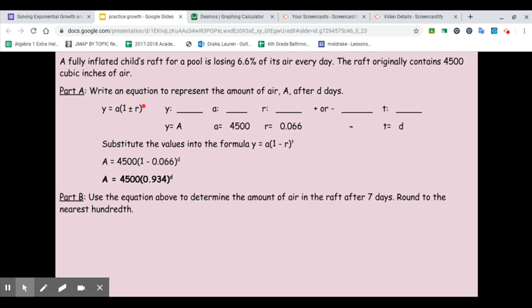Part B is now going to ask me to use the equation above, so use this, to determine the amount of air in the raft after 7 days. Round to the nearest hundredth. So this is just substitution. I'm going to substitute the number 7 in for d. Start with my equation and in place of d, I'll put the number 7.